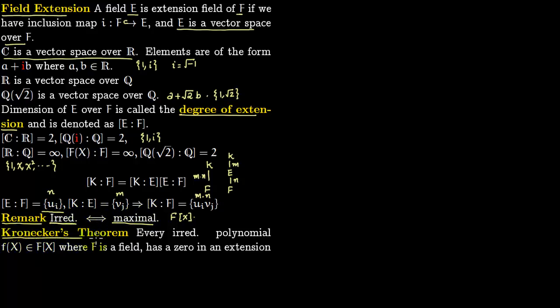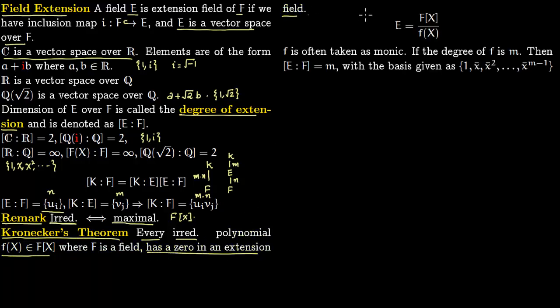An important theorem is Kronecker's theorem. This says every irreducible polynomial, where F is a field lying in F[x], has a zero in an extension field. This is how you construct the extension field: you have this and then you modulo out. This is a maximal ideal and therefore you will get a field here. F is often taken as monic, that means the leading coefficient is 1.